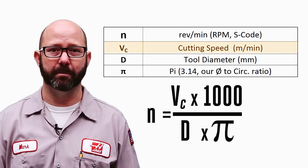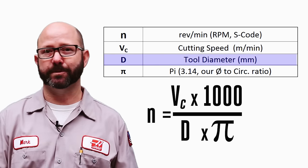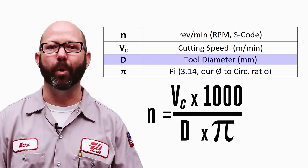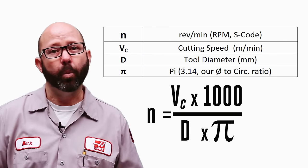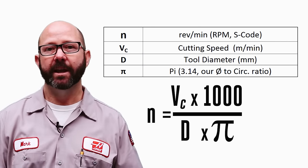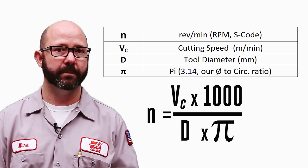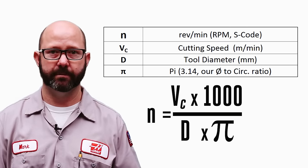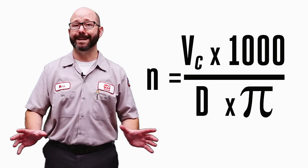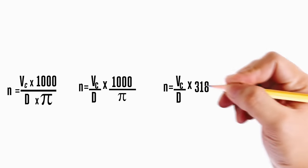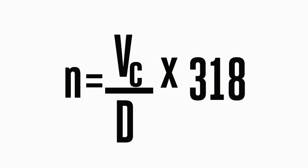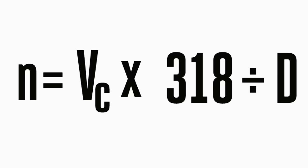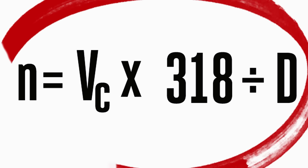VC is our cutting speed, our surface meters per minute. D — or sometimes DC or D1, depending on the catalog — is our tool diameter in millimeters. The 1000 in this formula is there to convert our meters per minute into millimeters per minute. This formula works fantastic, but we're going to simplify it a bit using algebra — we divide the 1000 by pi. 1000 divided by pi is about 318, and we'll use this simplified formula for the rest of the video.